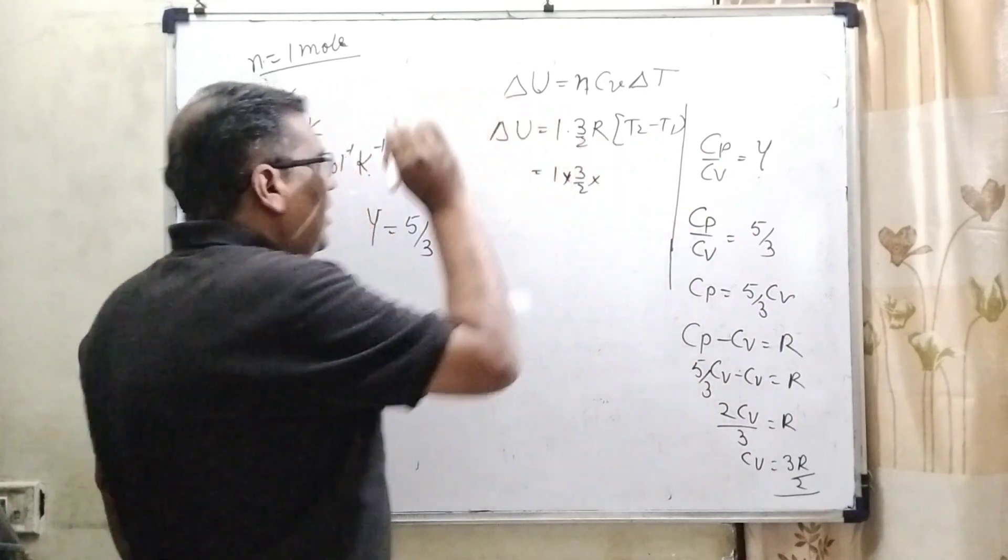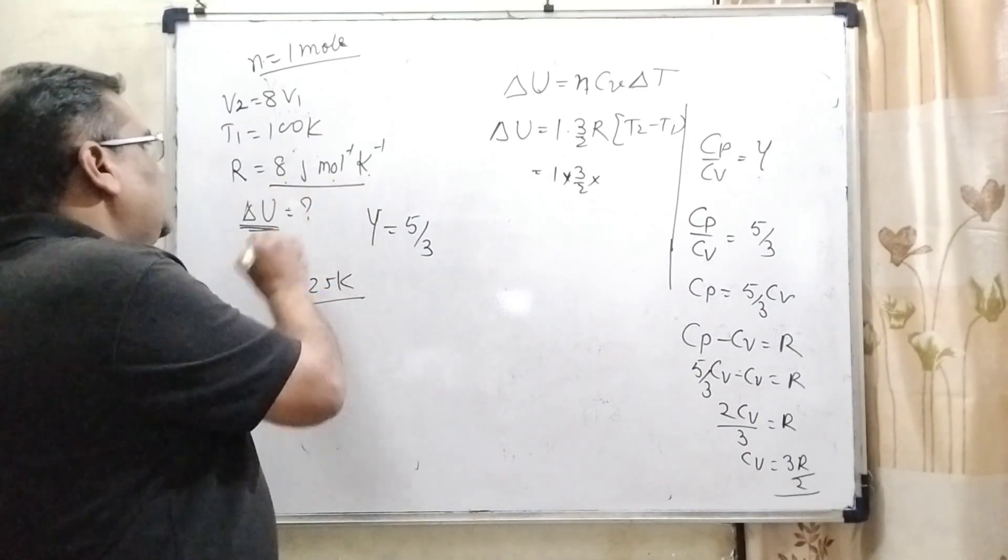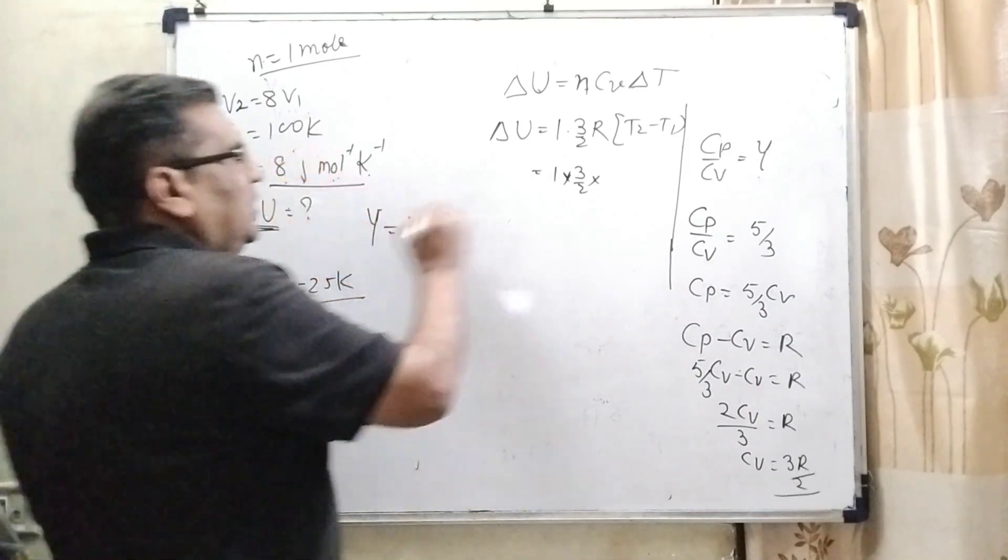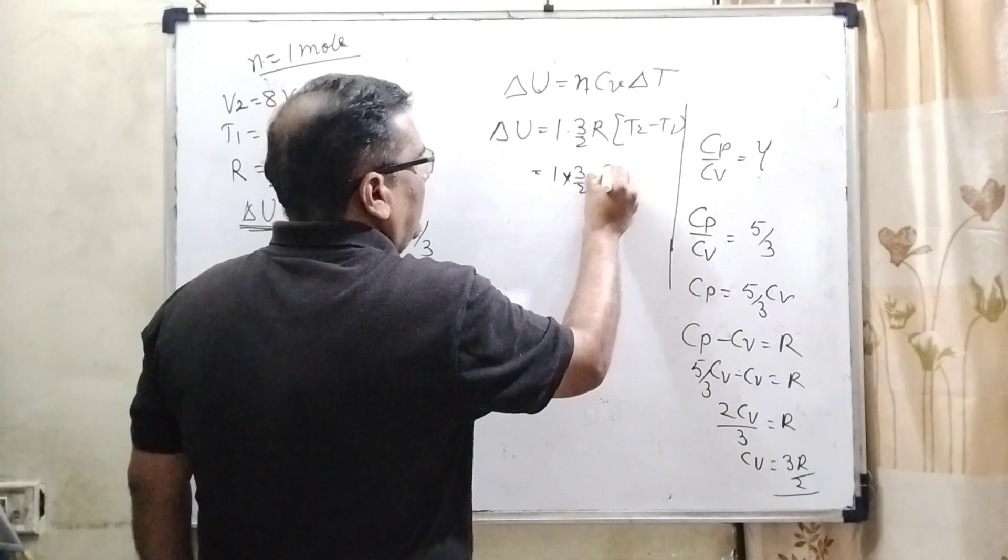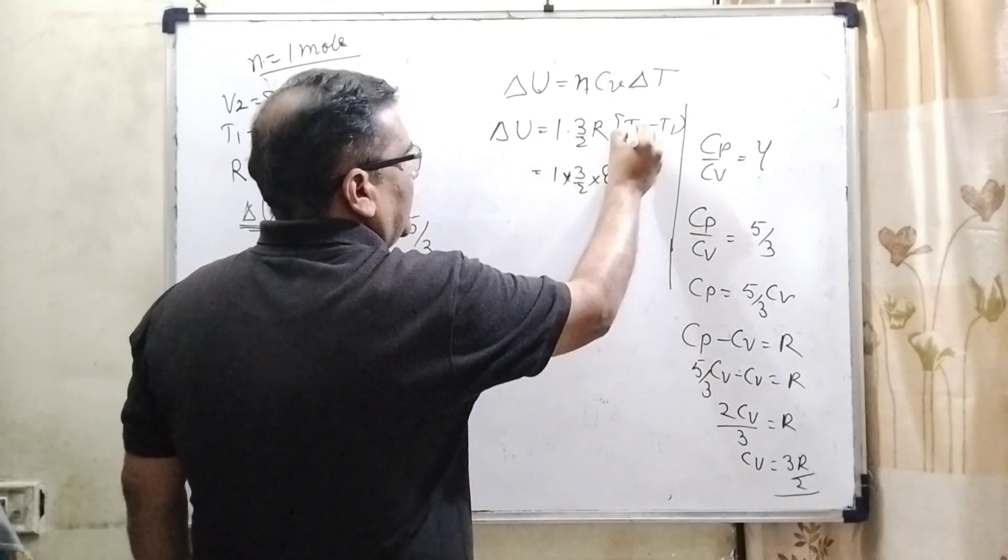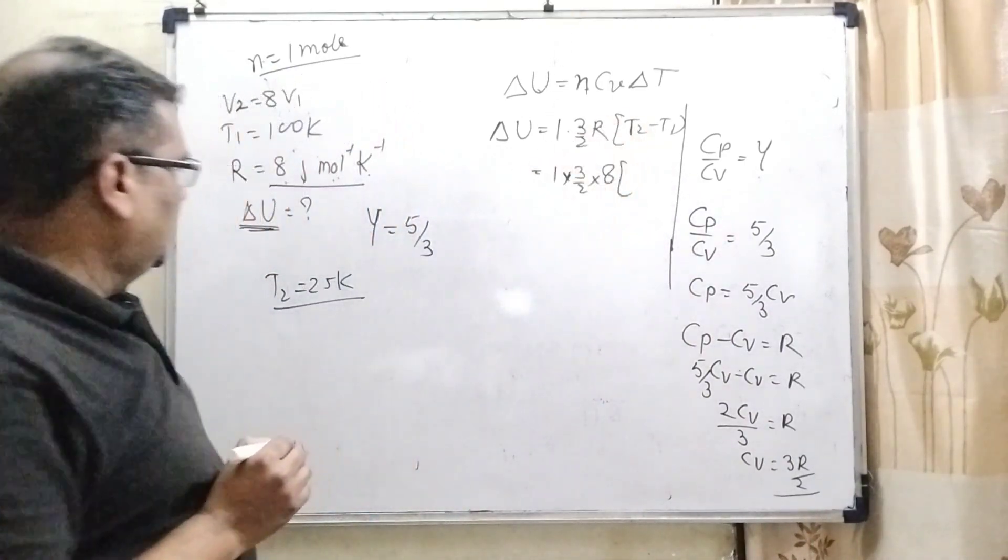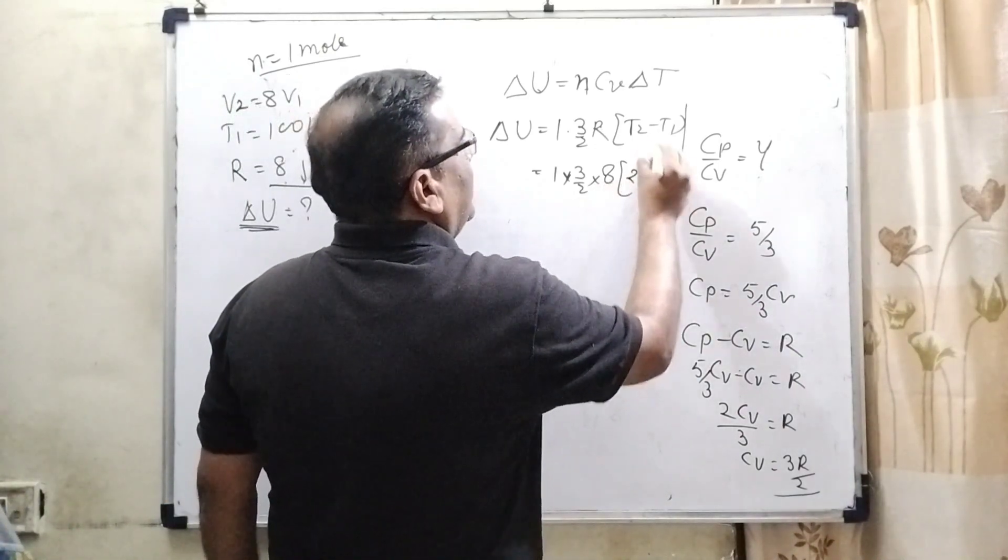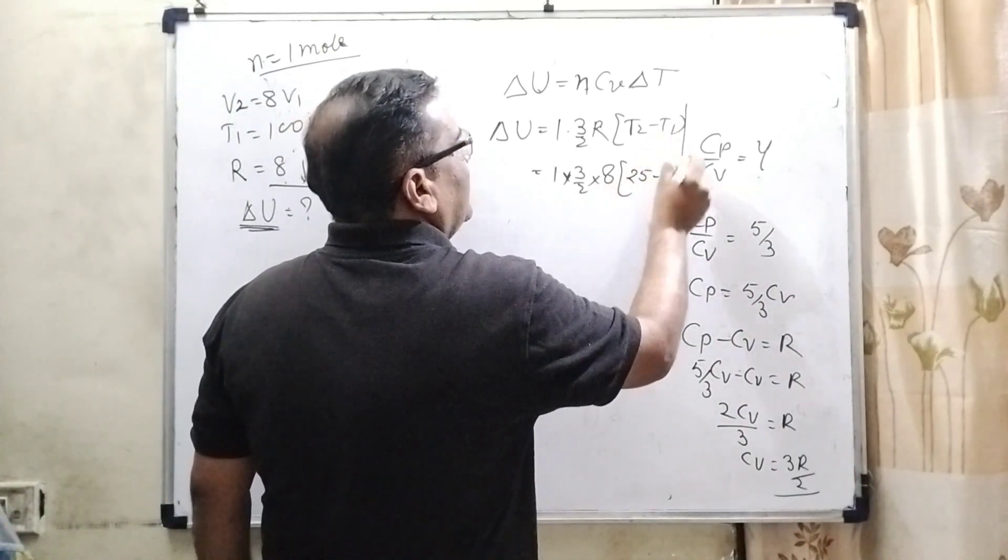What is the value of R? Here the value of R is 8 joule per mole per Kelvin. So now substitute the value of R here 8. And T2 we have already found out 25 and 100, T1 is given already.